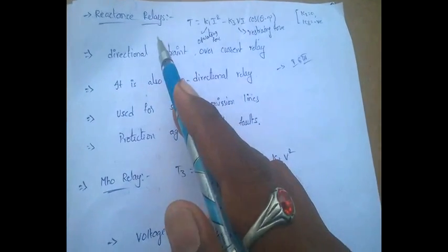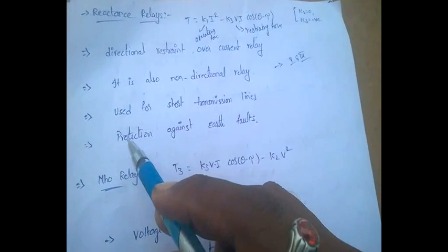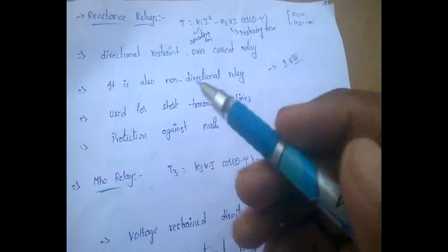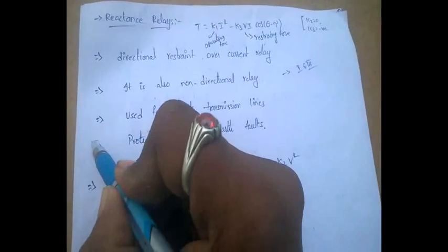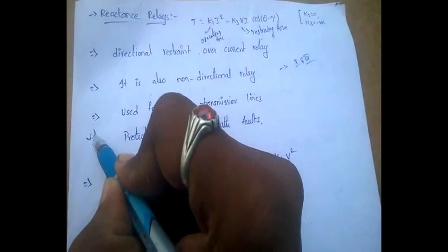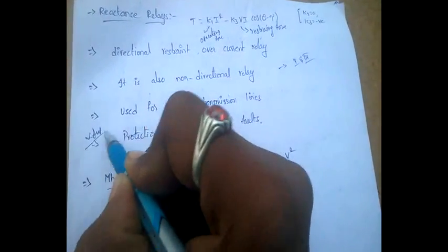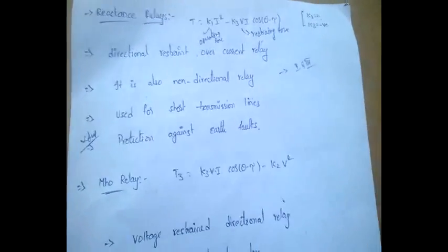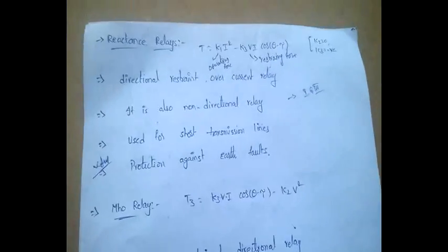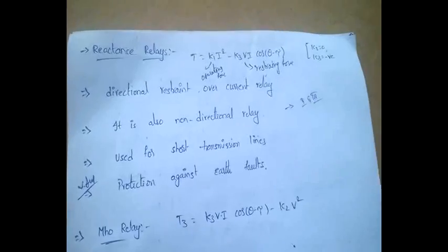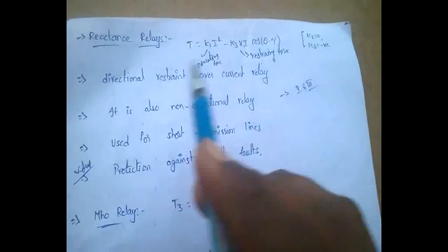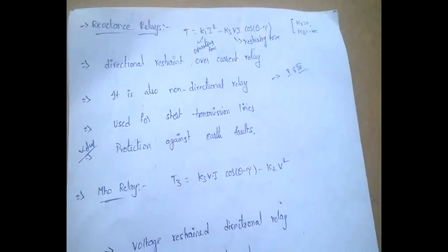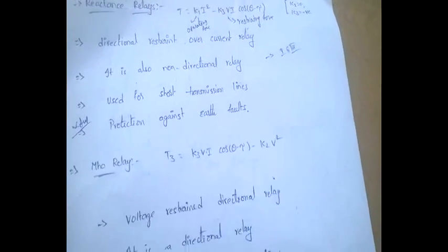Reactance relays are also used for protection against earth faults. So if asked which type of relay is used for protection against earth faults, the answer is reactance relay.